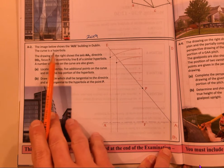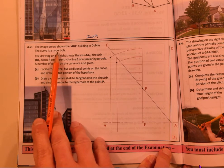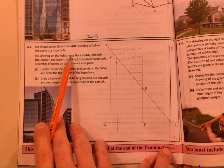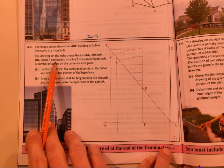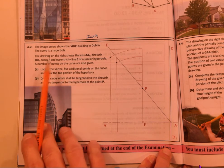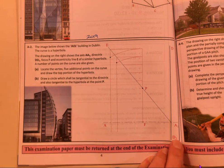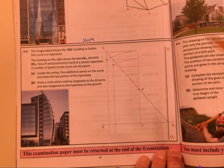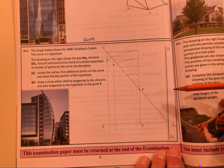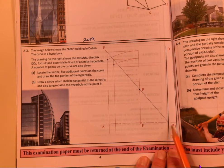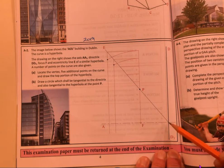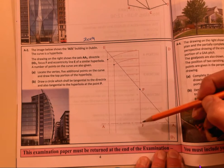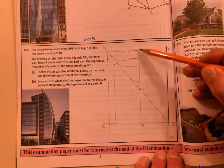Eccentricity greater than one, so an example would be four over three or something like that. The drawing on the right shows the axis AA, directrix DD, and the focus F and eccentricity line E of a similar hyperbola. A number of points on the curve are also shown. So what they've given you is a half-done curve. You have directrix, axis, focus, and the eccentricity point.